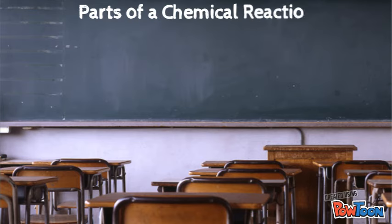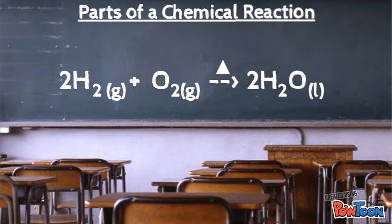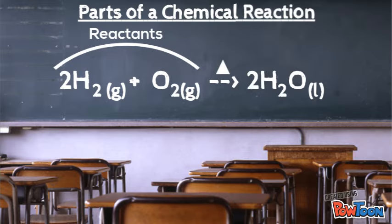Parts of a chemical reaction: if this is our example here, we have 2H2 plus O2 yields 2H2O. Everything on the left side of the arrow are called reactants. They react together to make the products. So everything on the right side of the arrow are called the products. It's what you're producing.